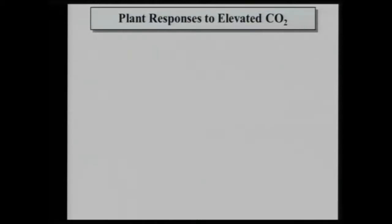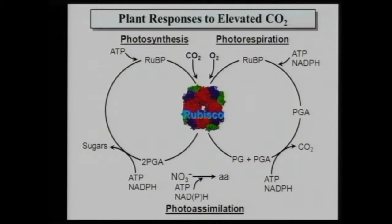Photorespiration was considered in many places as a wasteful process, because when we grow plants under conditions without photorespiration, we have a 30% increase in yield. That's why there has been lots of genetic work trying to diminish photorespiration — billions of dollars were invested. However, everything failed. And the question is: if this process exists through evolution, maybe it has a role. Taking it off can increase yield short-term by 30%, but what else does it do?